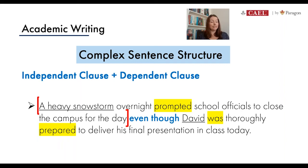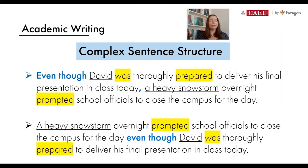The independent idea is placed inside red brackets — that's the most important part of the sentence. You absolutely must have an independent clause, otherwise you don't have a sentence at all. The dependent clause contains the subordinating conjunction, which in this case is 'even though.' Looking at the two versions side by side: the top version starts with the dependent clause because it begins with 'even though,' while the bottom example starts with the independent part, 'a heavy snowstorm,' so the conjunction falls in the middle.